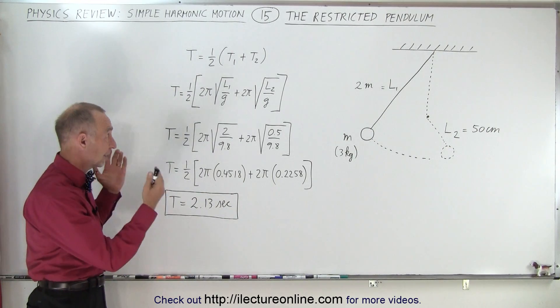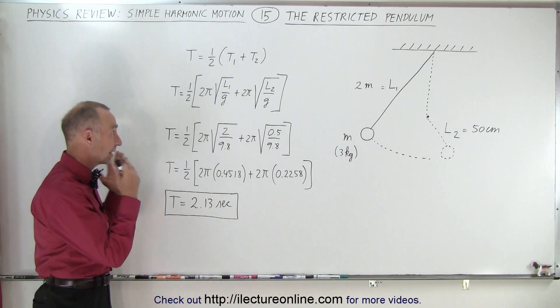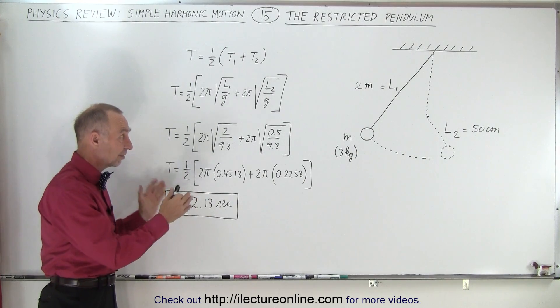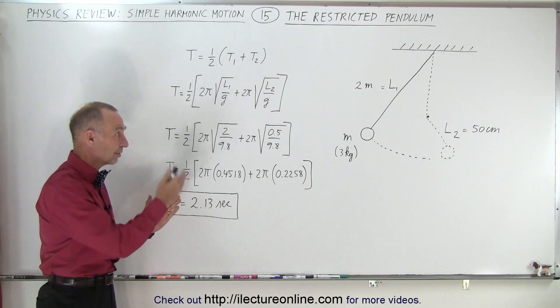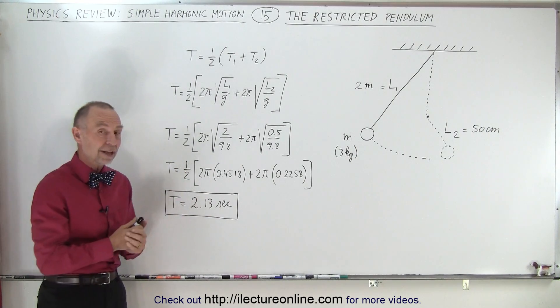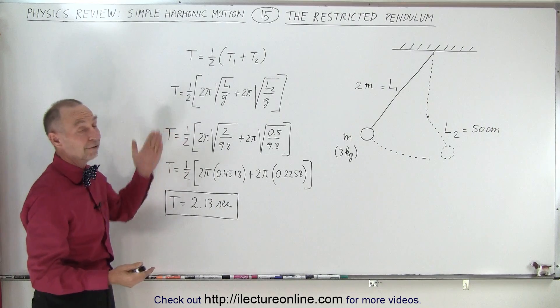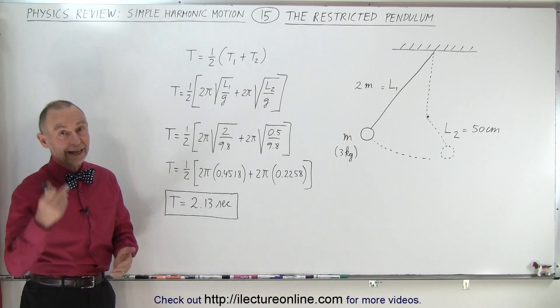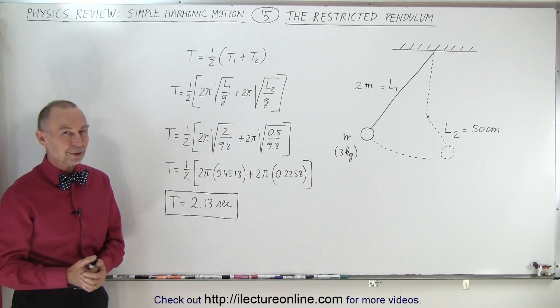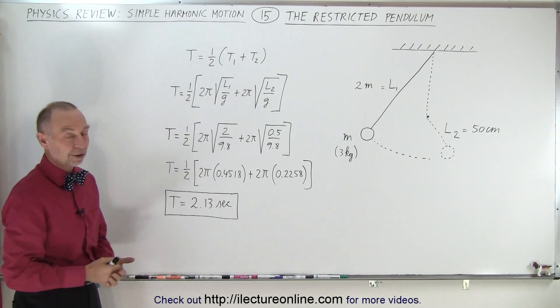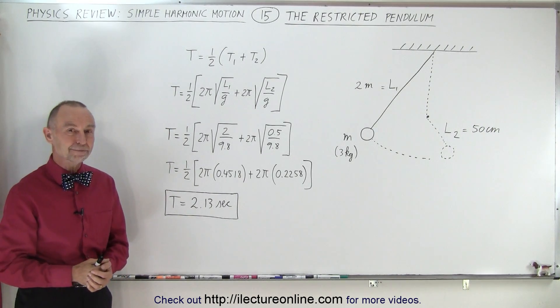The key here is that you just calculate the period on both sides, add them together, take half of that — essentially that's taking the average value — and that is the period of the whole pendulum when it's restricted on one side.